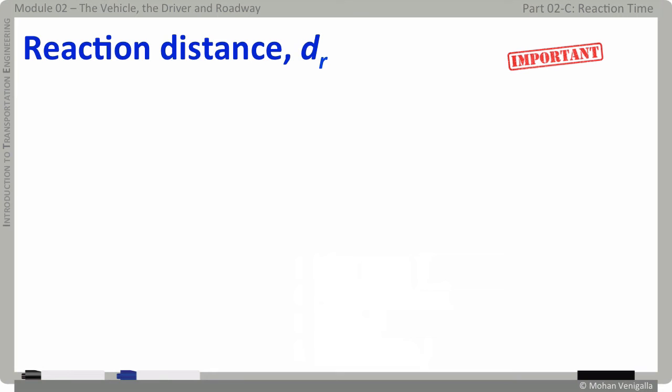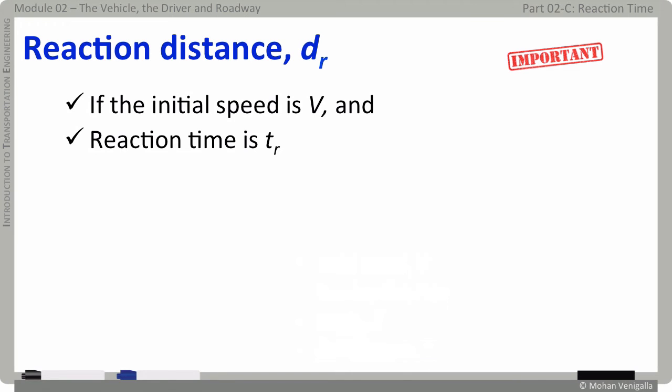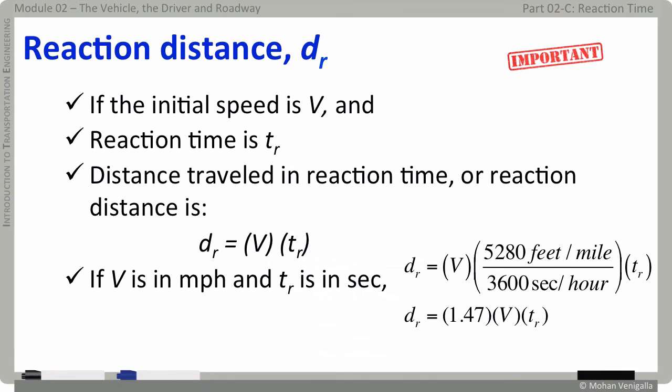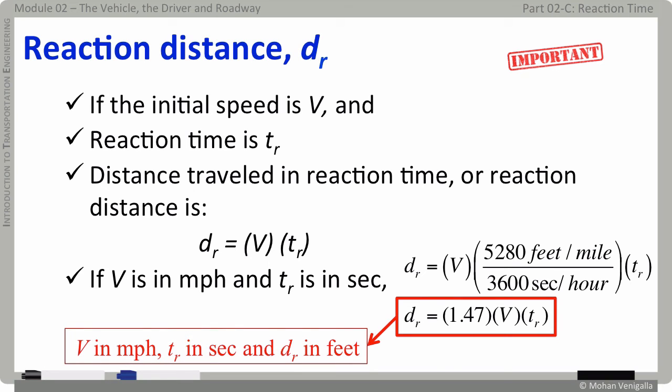Now to computing reaction distance d sub r. If the initial speed is v and reaction time is t sub r, distance traveled in reaction time or reaction distance is velocity times time or dr equals v times t sub r. If v is in miles per hour and tr is in seconds, we can convert that into feet per second using this formula. So it's very simple: 5280 feet per mile and 3600 seconds per hour. If you're doing this conversion you'll have dr equals 1.47 v times tr. Remember, in this last equation v is in miles per hour and t sub r is in seconds.